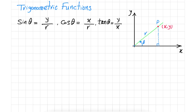Cotangent of theta is adjacent over opposite, so it is X over Y.